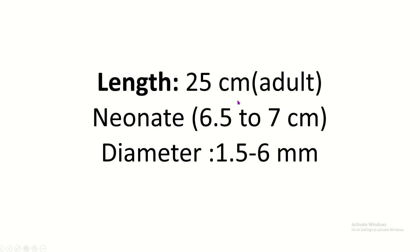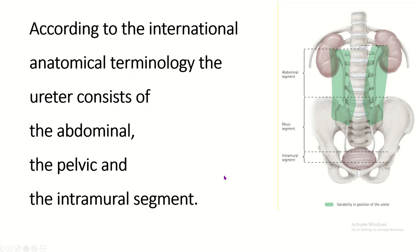The average length of the ureter is 25 centimeters, and the average diameter is 1.5 to 6 millimeters. According to international anatomical terminology, the ureter consists of an abdominal part, a pelvic part, and an intramural part.